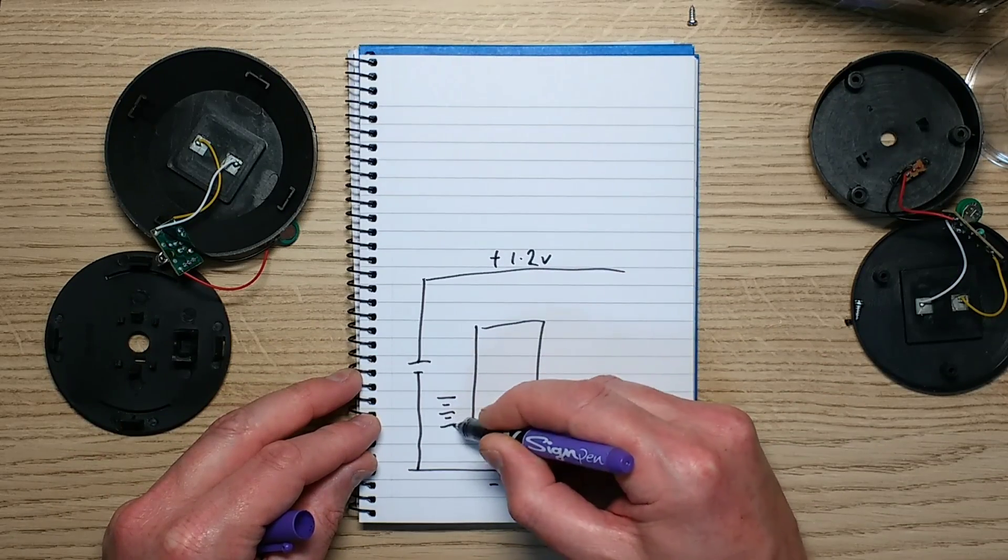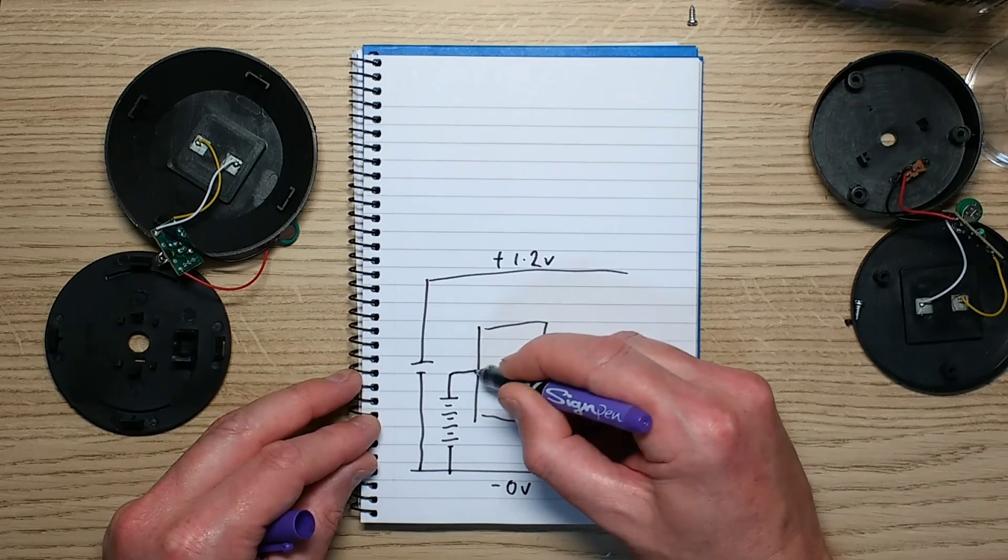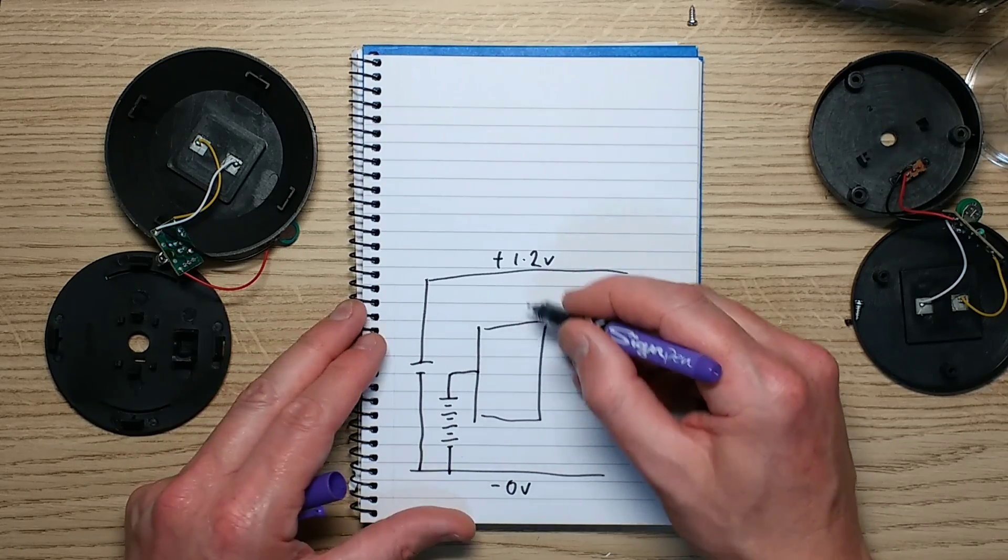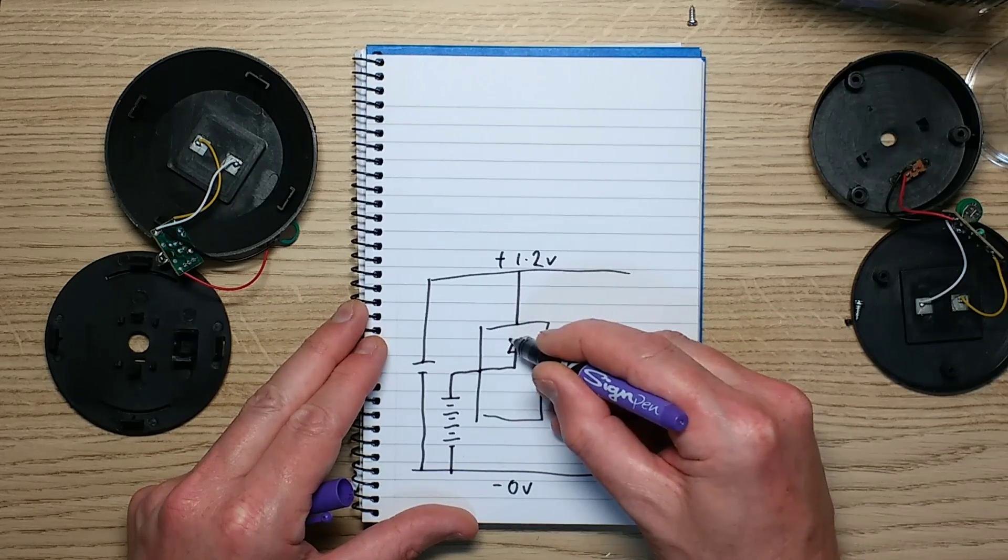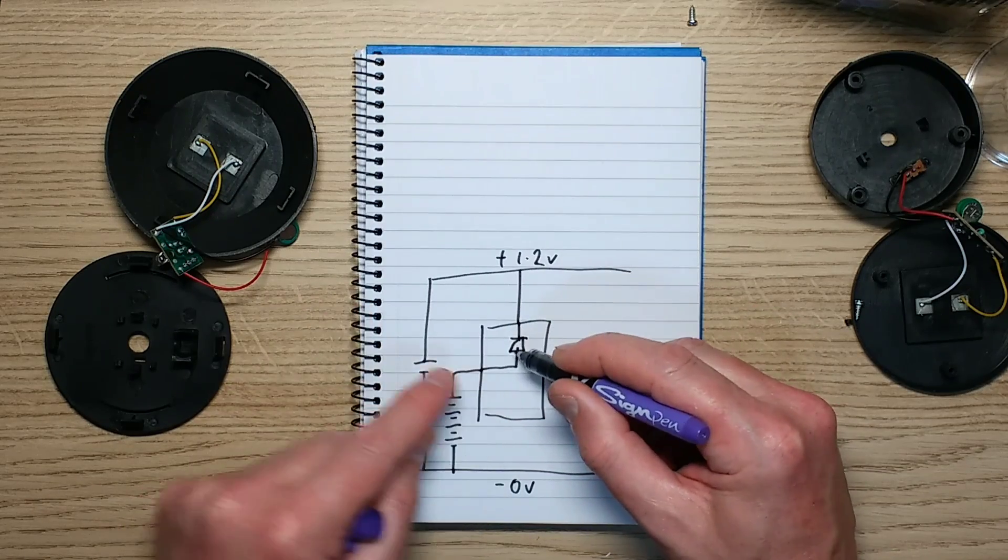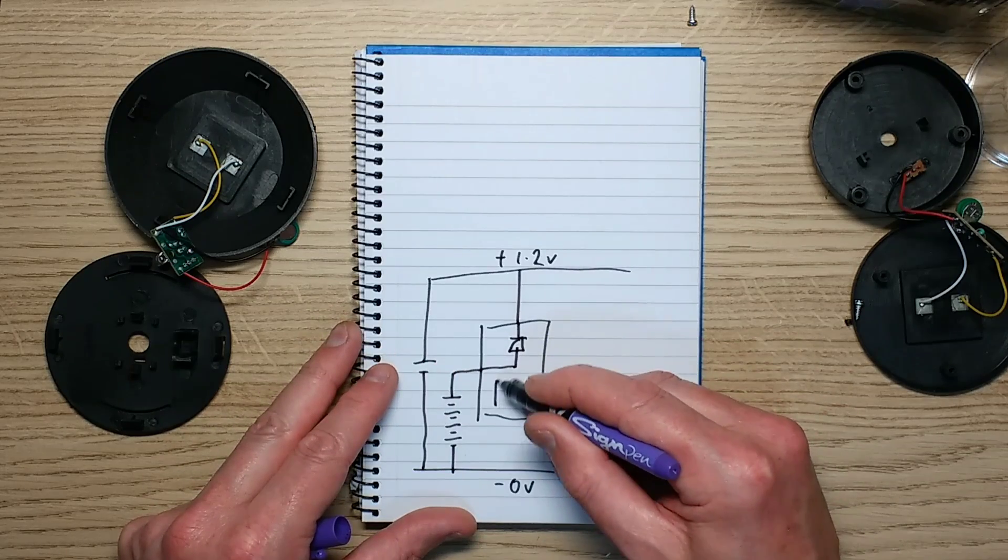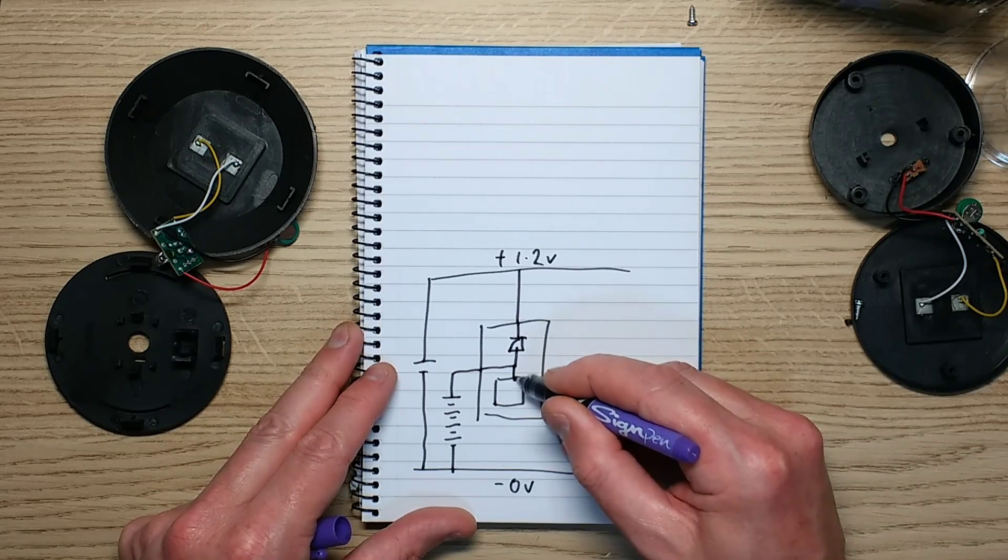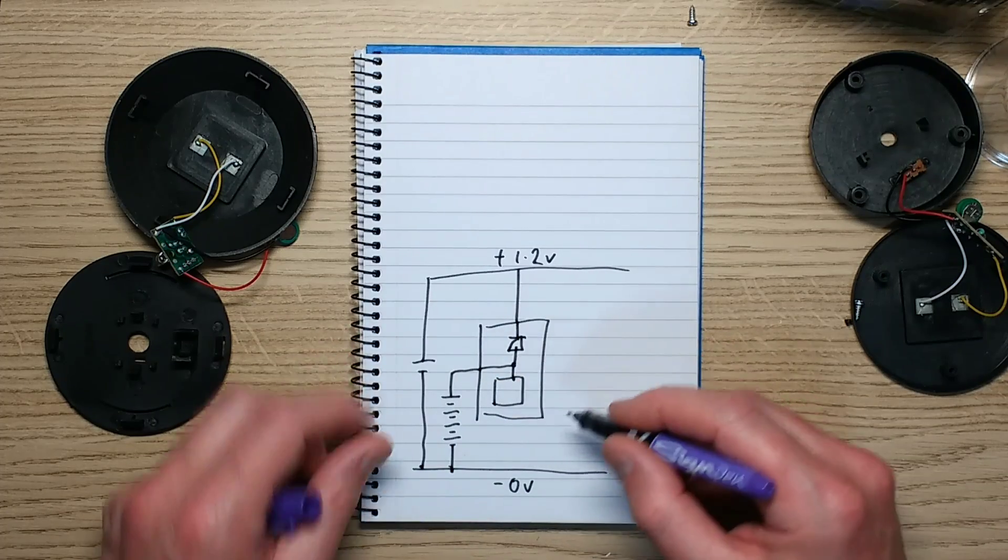That effectively goes out to charge the nickel metal hydride cell via a diode inside the package. Also inside the package is the control circuitry and it monitors the voltage coming from this solar panel and uses that to detect when it's dusk and to turn the circuitry on to drive the LED.